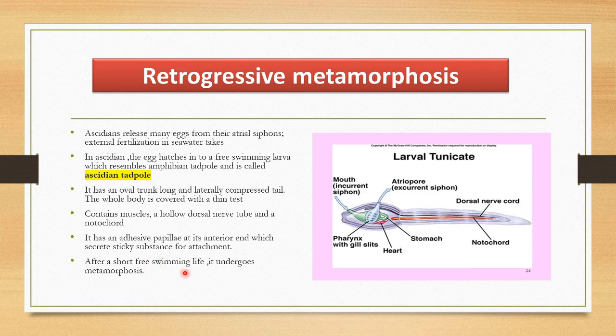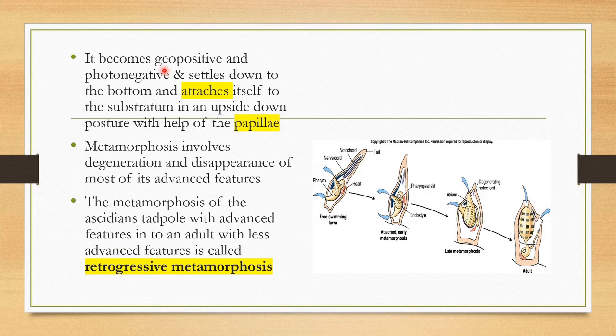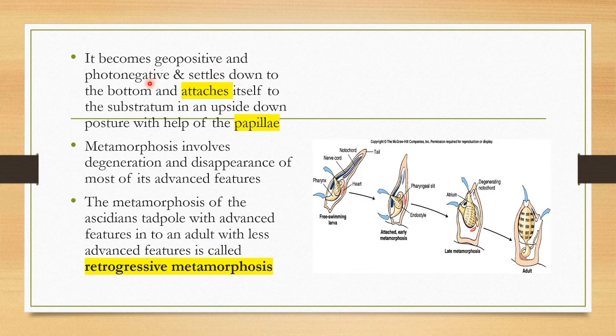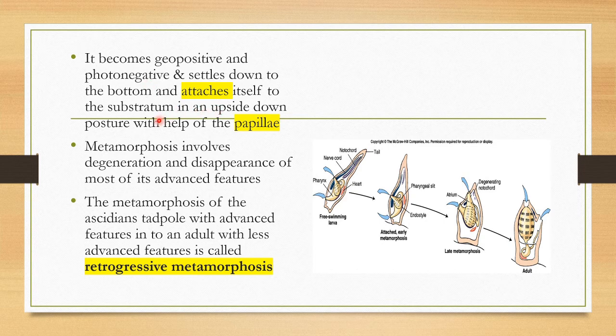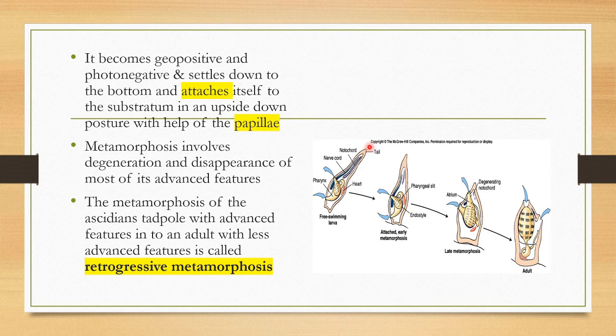After a short free-swimming life it undergoes metamorphosis into its adult. In that process it becomes geopositive and photonegative. That means it moves down towards the bottom and attaches itself to the substratum in an upside-down posture with the help of papillae. So this is a papillae and it is fixed at the bottom upside down. The tail is on the upper side.